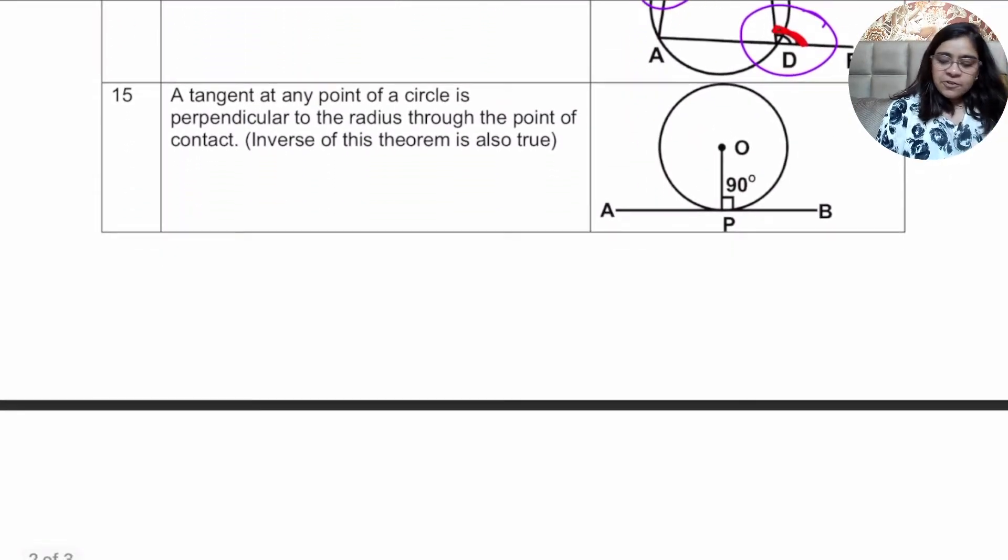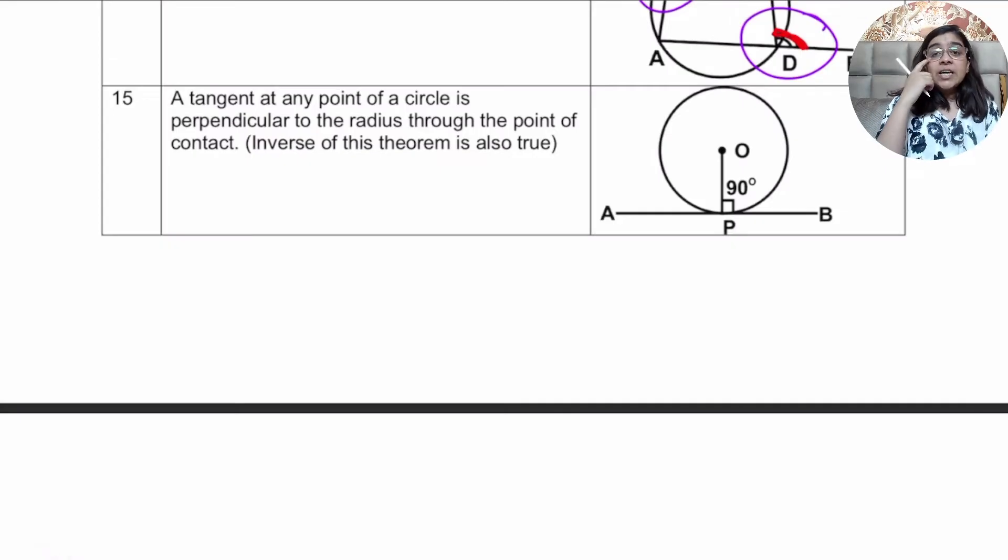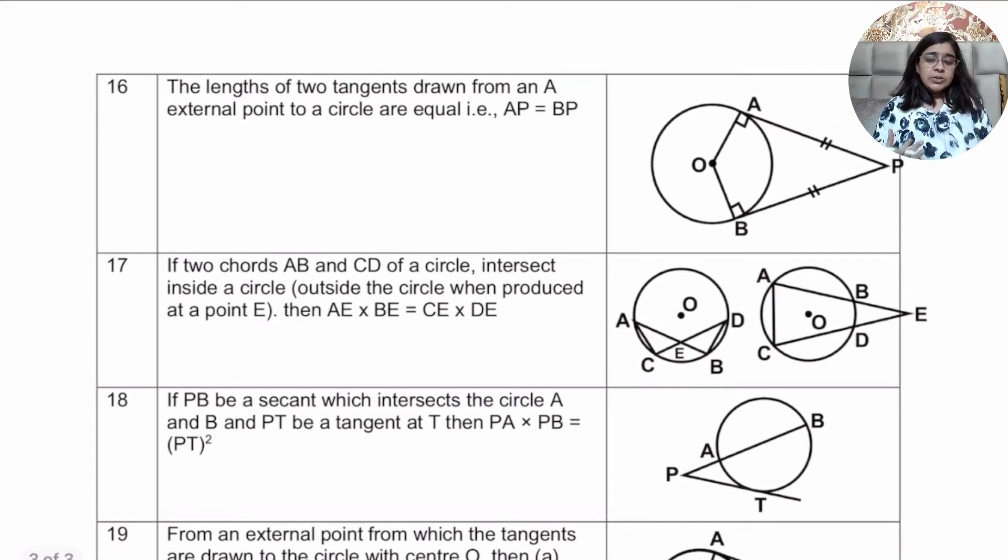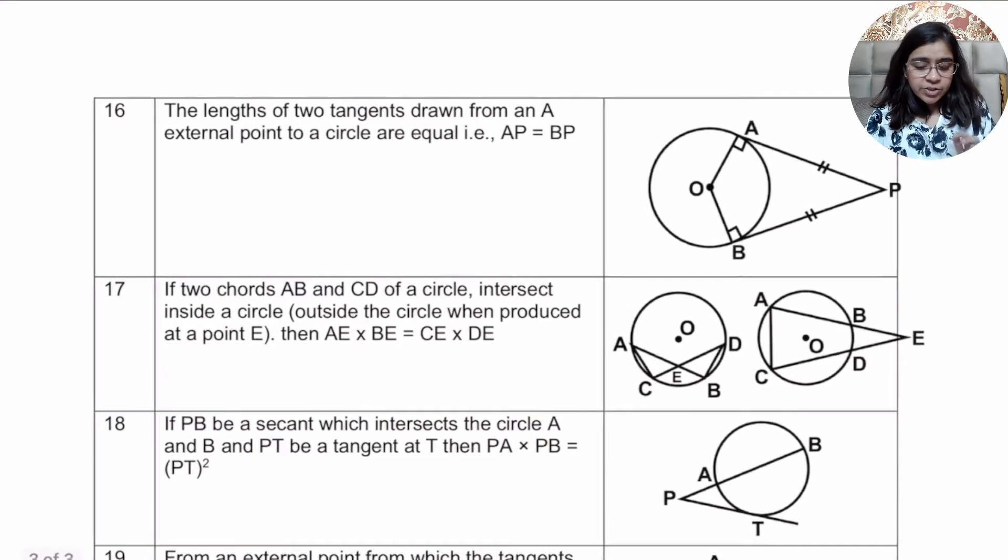Finally, we move to the 15th one. This is very easy, guys. Tangent always makes 90 degree. I don't need to tell you that. Now this is some rules related to the tangents, so please pay attention to that.